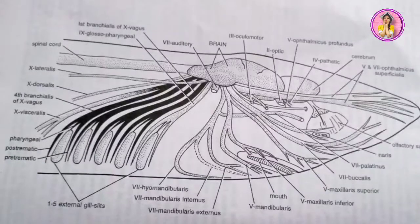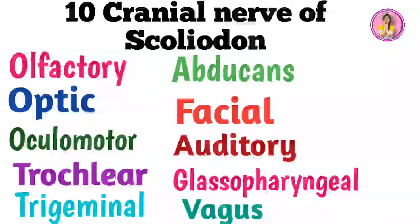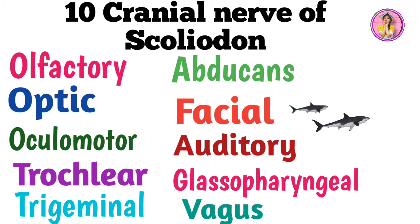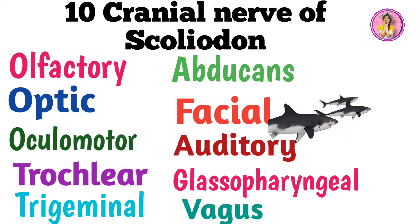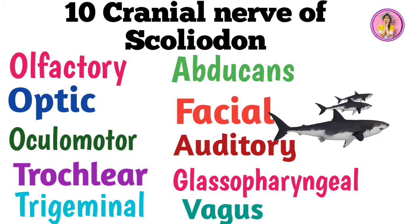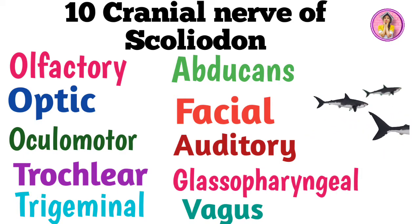Let's move on. The 10 cranial nerves are: first, olfactory nerve; second, optic nerve; third, oculomotor; fourth, trochlear; fifth, trigeminal; sixth, abducens; seventh, facial; eighth, auditory; ninth, glossopharyngeal; and tenth, vagus.